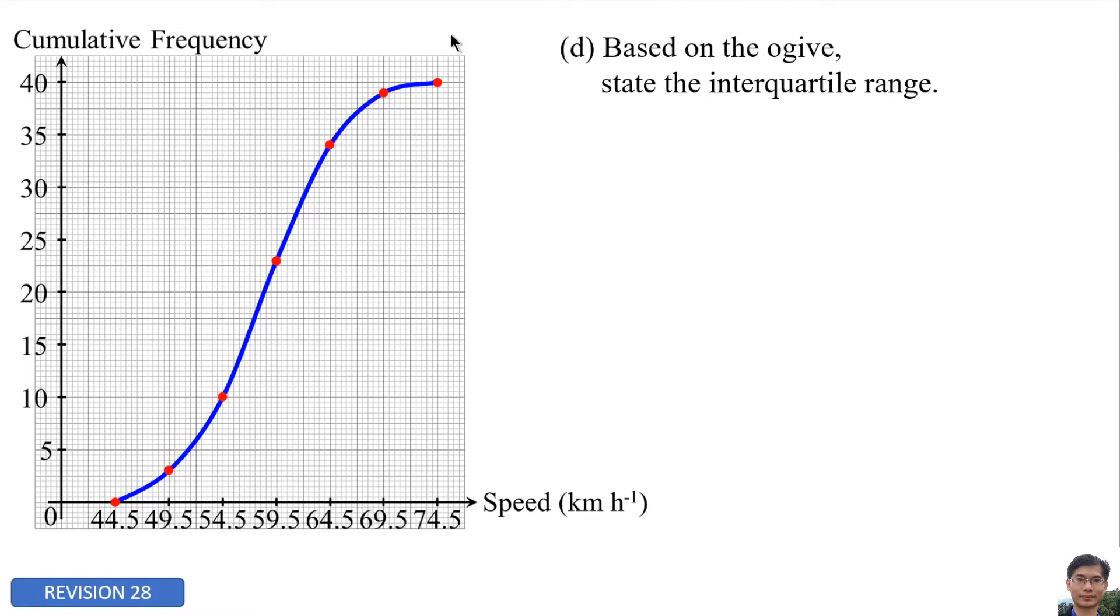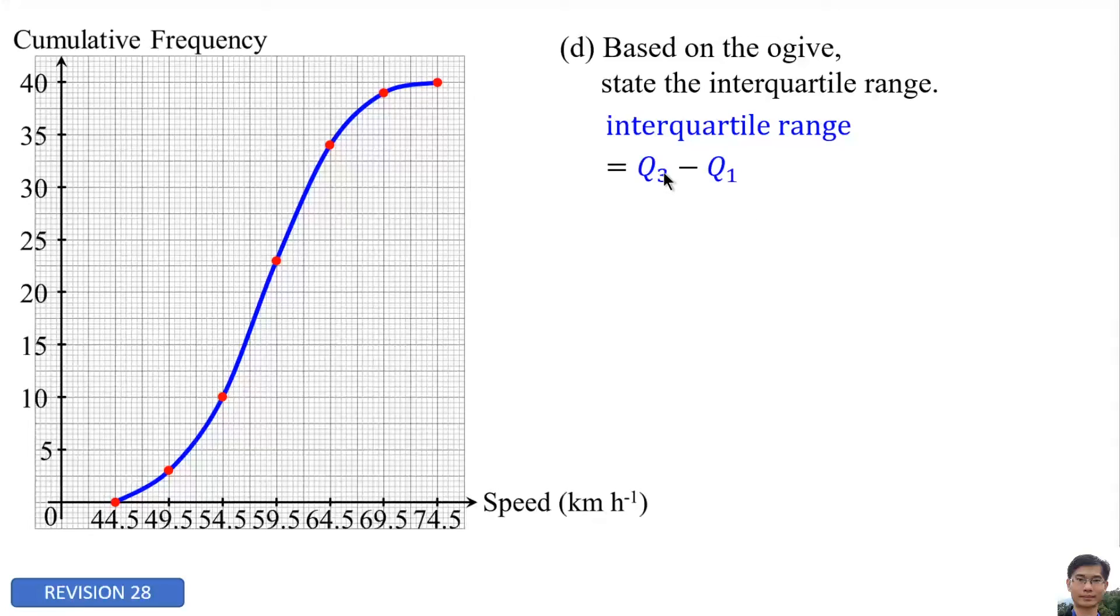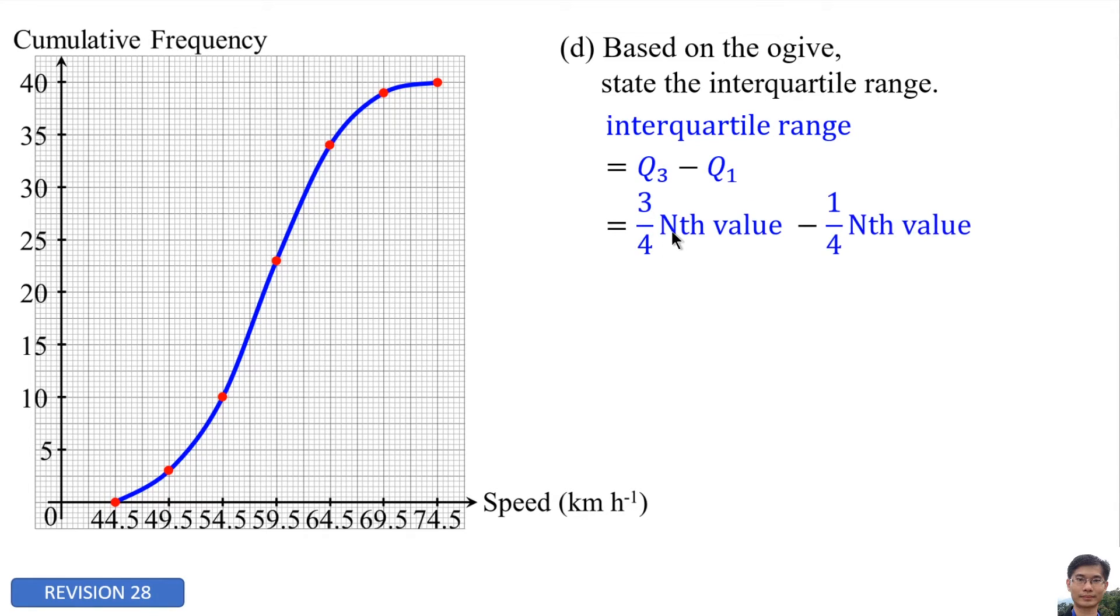Based on the ogive, state the interquartile range. Interquartile range is the third quartile minus first quartile. Third quartile is 3/4 of n value, and first quartile is 1/4 of n value. N means the total frequency, 40, or the total of cars.